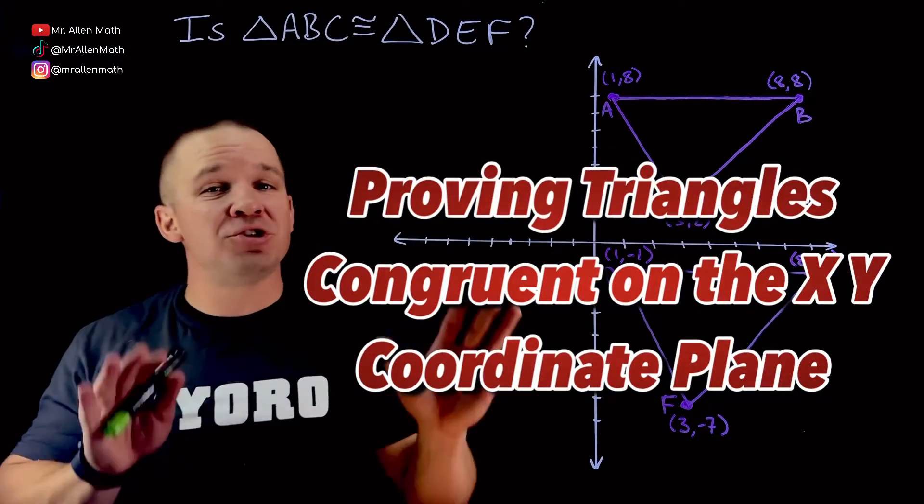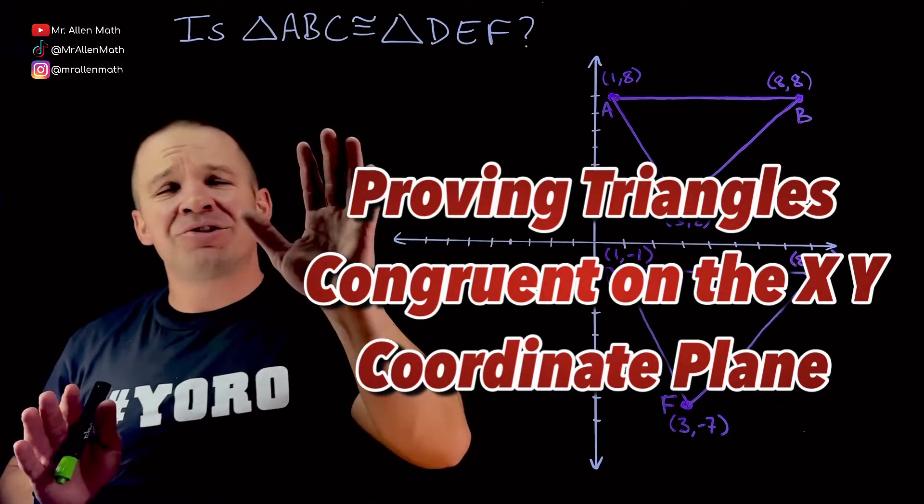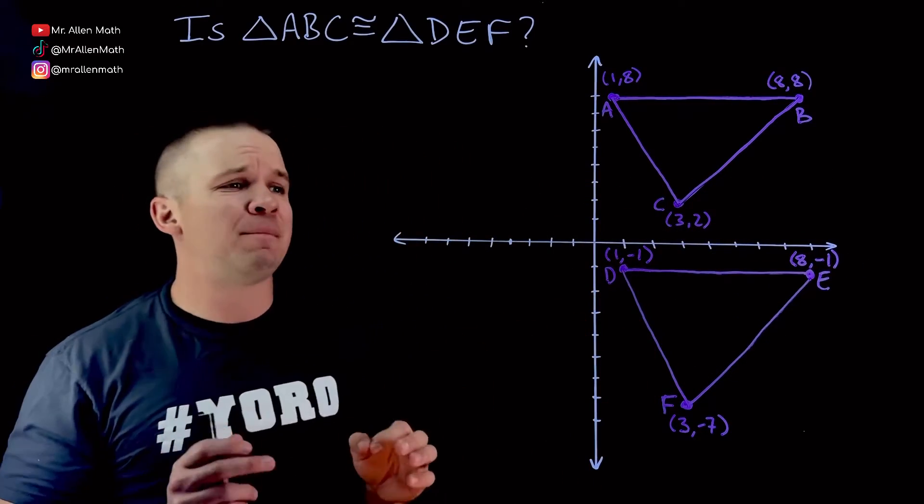What's poppin' dogs? Mr. Allen here with some geometry on the XY coordinate plane. We want to know, is triangle ABC congruent to triangle DEF? I'm dying to find out, man.